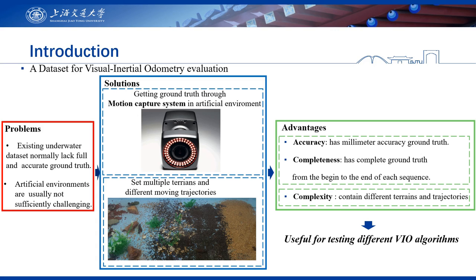In order to solve this problem, we built an artificial pool and used a motion capture system to get the ground truth trajectories of the robot. Since artificial environments are usually not sufficiently challenging, we arranged different terrains and designed different motion trajectories to collect data.